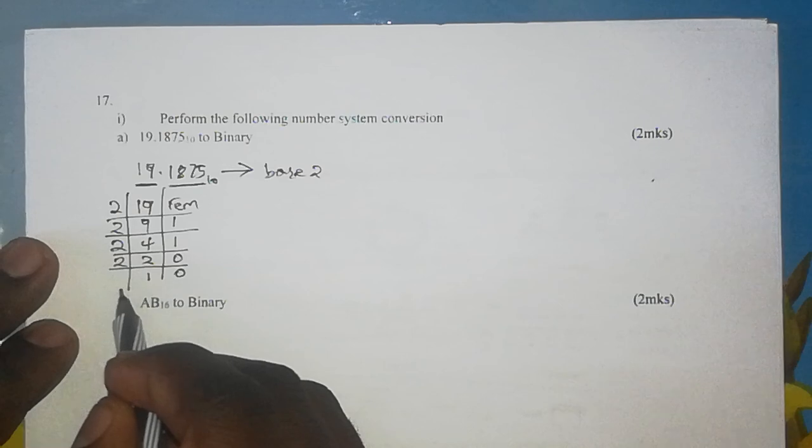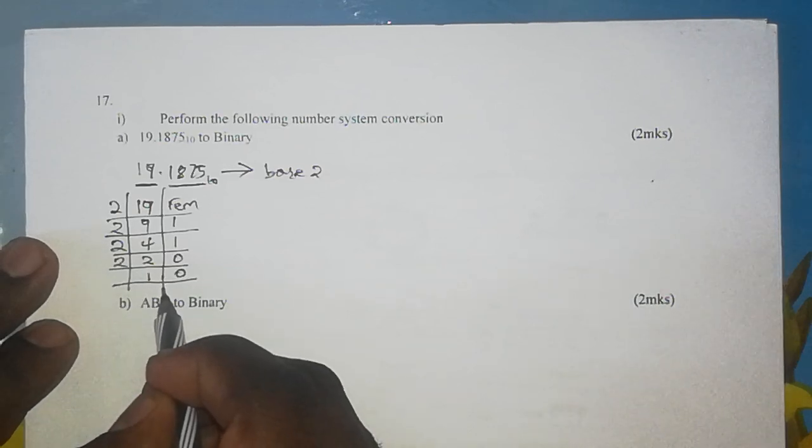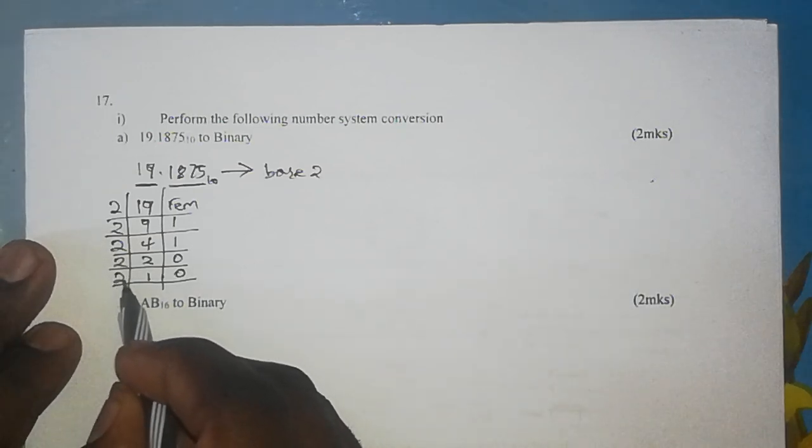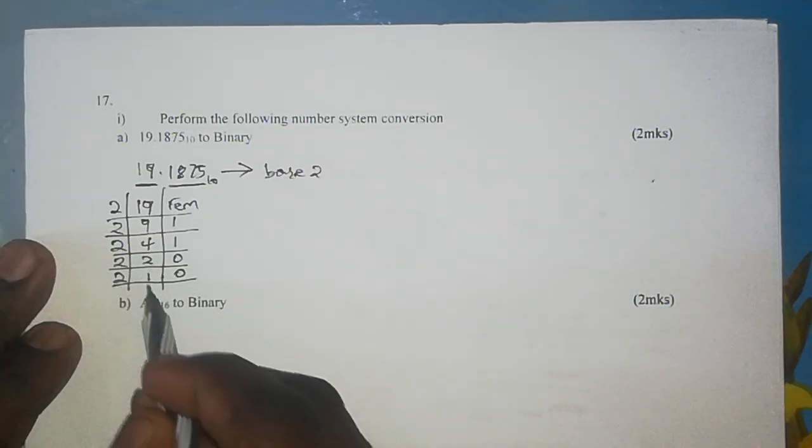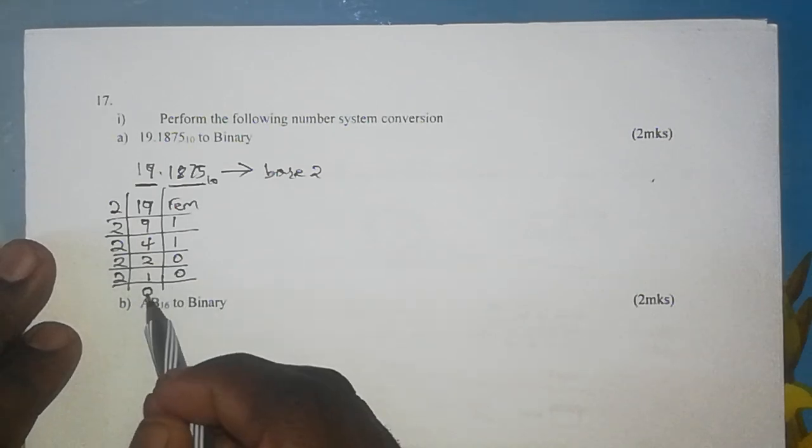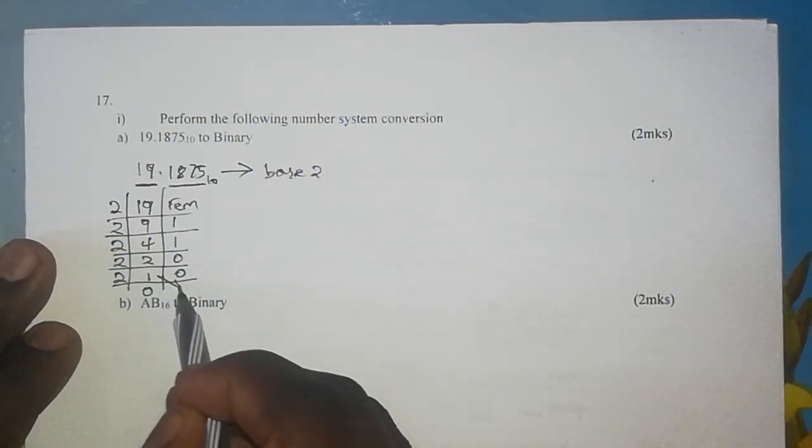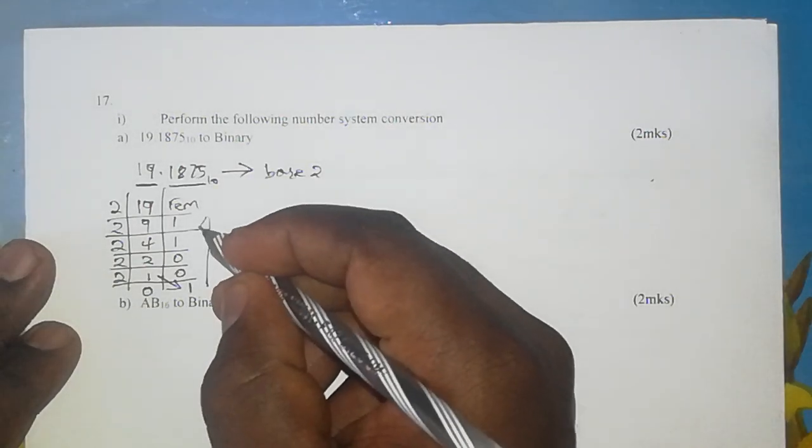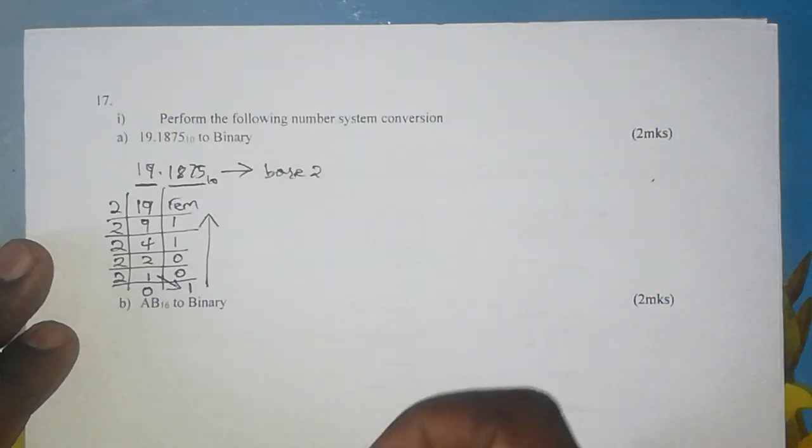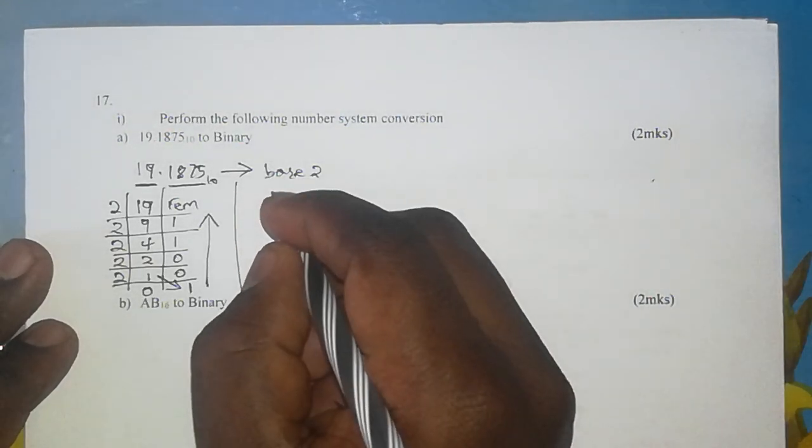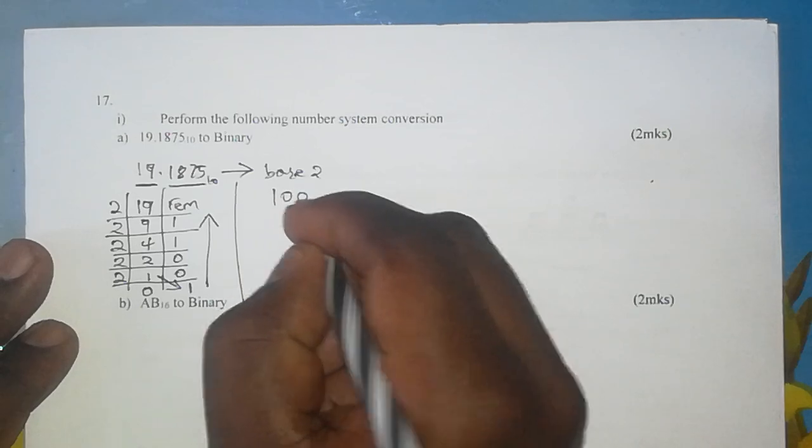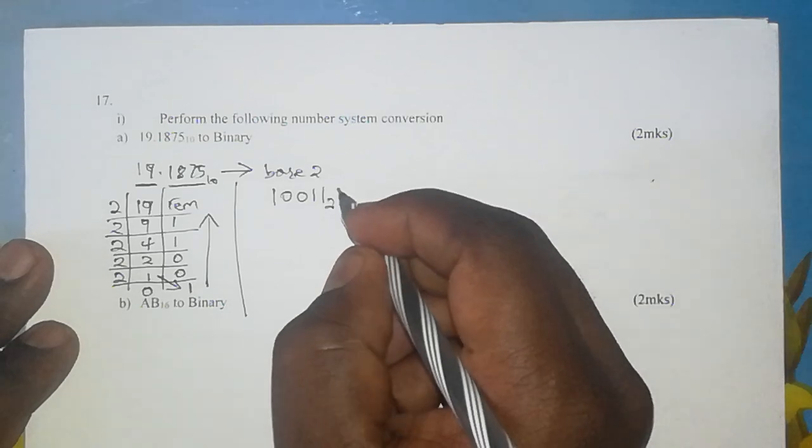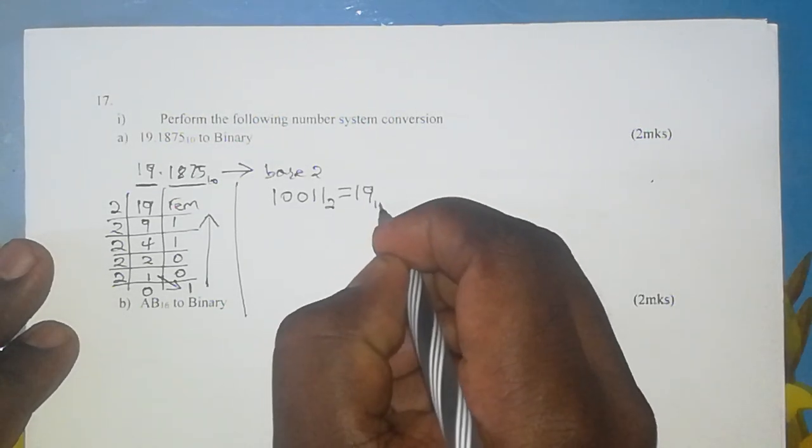2 into 4 is 2 with no remainder. 2 into 2 is 1 with no remainder. And we have to keep dividing by 2 until the quotient is 0. So 2 into 1, 2 is larger than 1, so the quotient is 0 and the remainder is 1. Now here we read our remainders in reverse order, which gives us 1 0 0 1 1. This is the equivalent of 19 base 10.